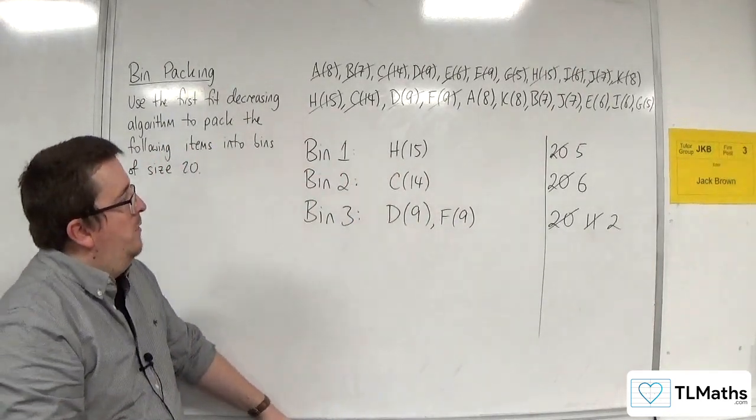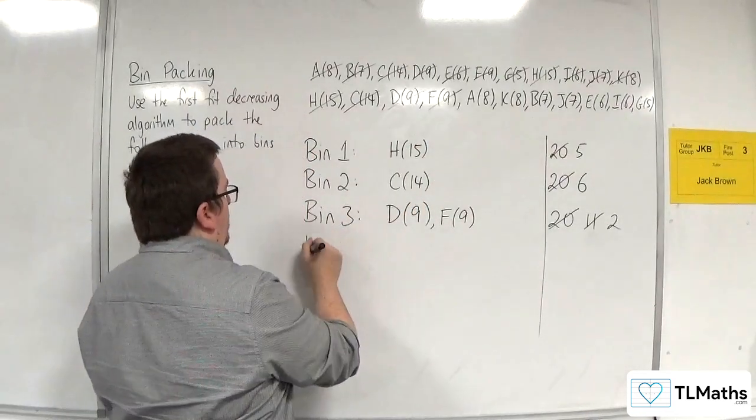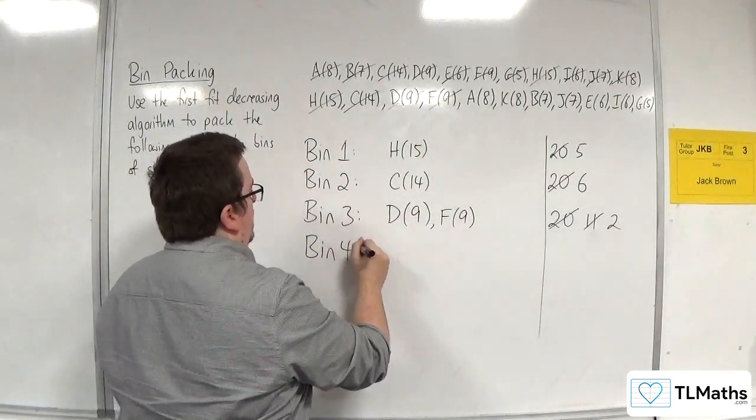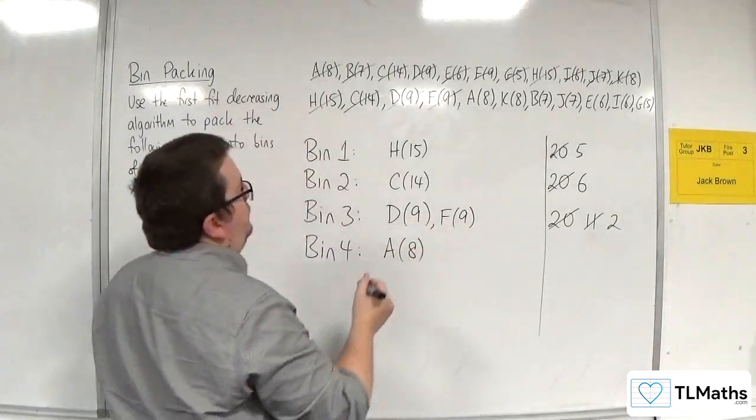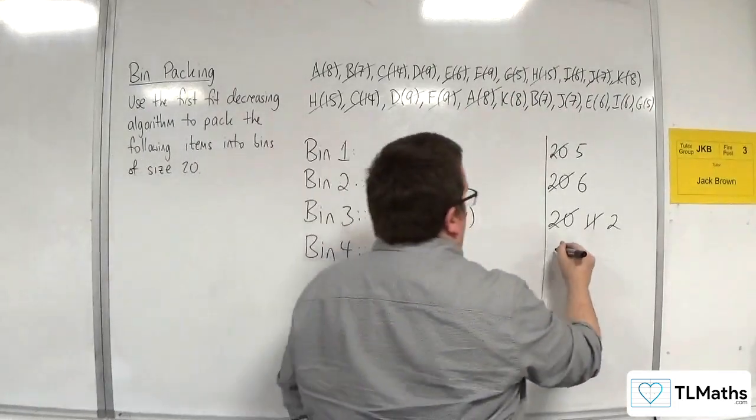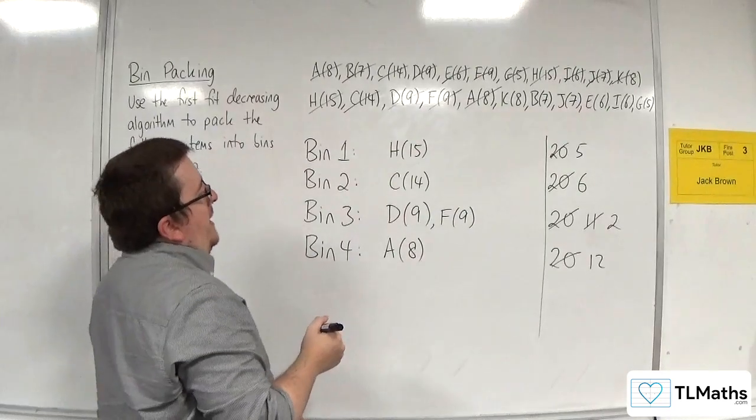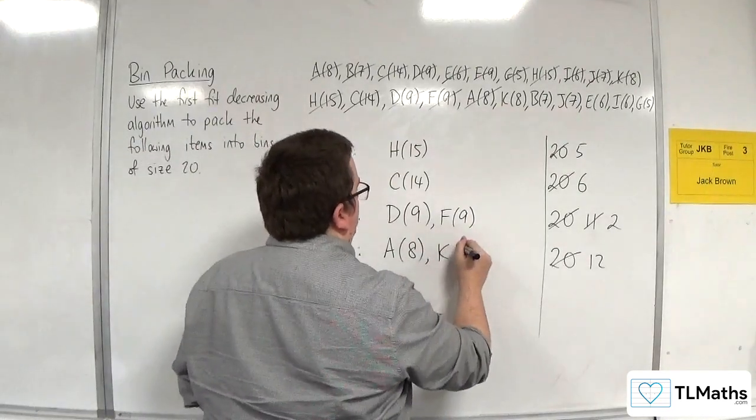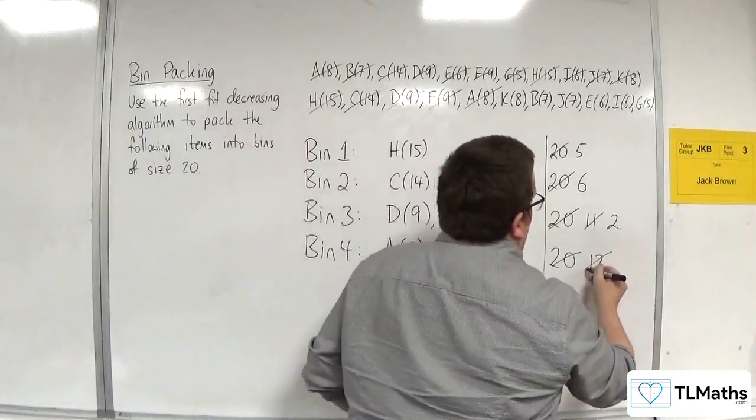Next one is A8. Okay. So, that can't go into bin 1, bin 2 or bin 3. So, I've got to open up bin 4 now. So, A8. Then, I've got K8. That's gone down from 20 to 12 just before I go any further. So, K8 can go into bin 4. Because it can't go into bin 1, 2 or 3. So, that brings that down to 4.